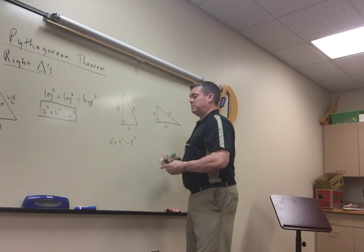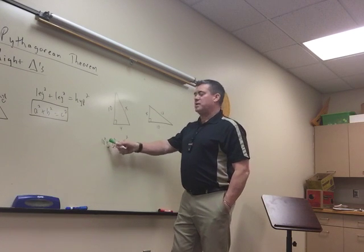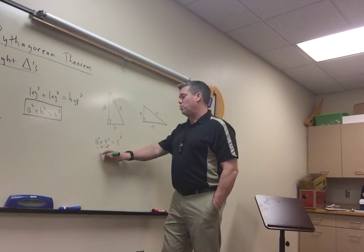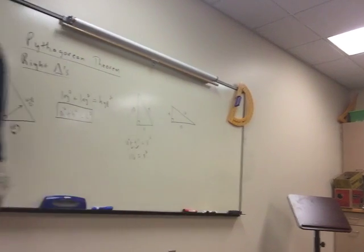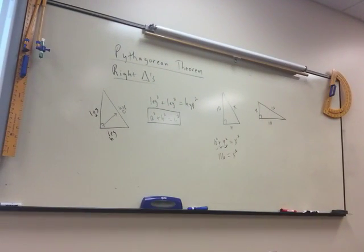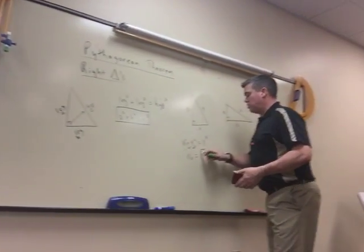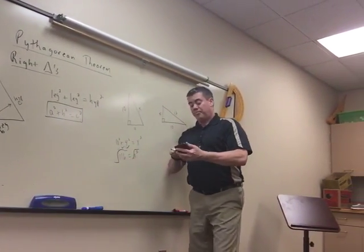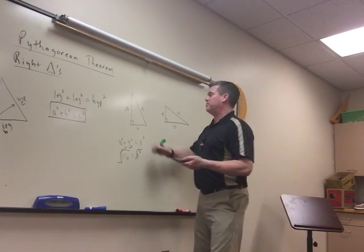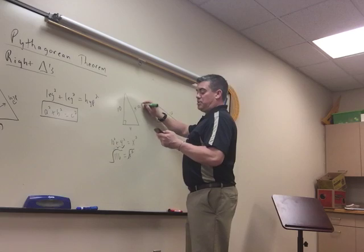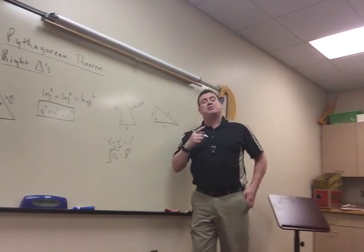So with a² + b² = hypotenuse squared: 10 squared is 100, 4 squared is 16, so you'd have 116 = x². To figure out x you take the square root — most of the time we round to the nearest tenth, so that would round to 10.8.